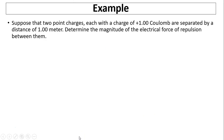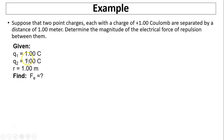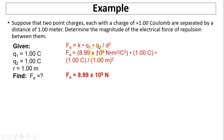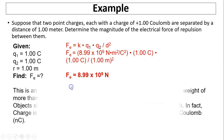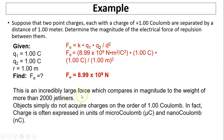Suppose two point charges each with one coulomb of charge are separated by a distance of one meter. What is the electric force of repulsion between them? Q1, Q2, and R are given — simply substitute into the equation. You get 8.99 times 10 to the 9 newtons — a very, very big number. This is an incredibly large force, comparable in magnitude to the weight of more than 2,000 jetliners. Objects simply do not acquire charges on the order of 1 coulomb.